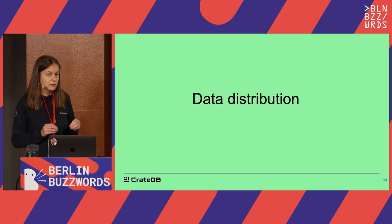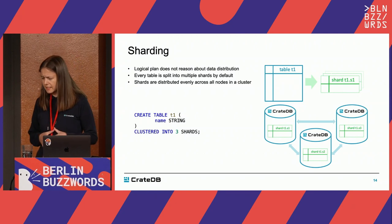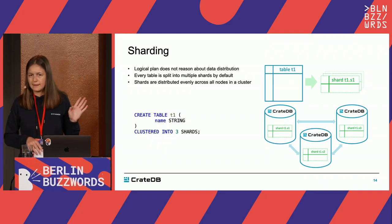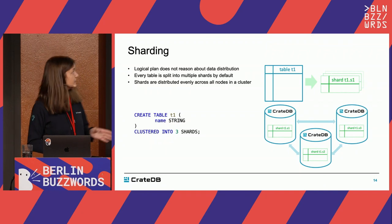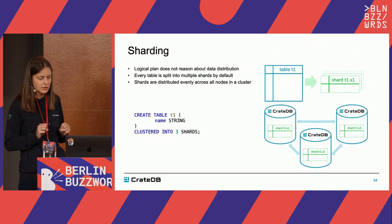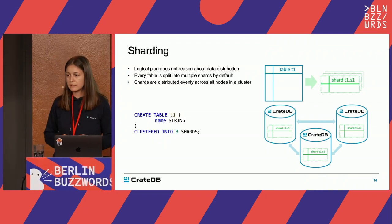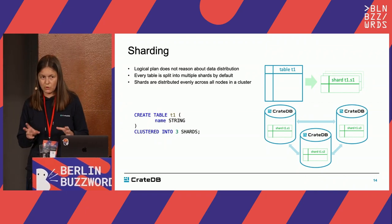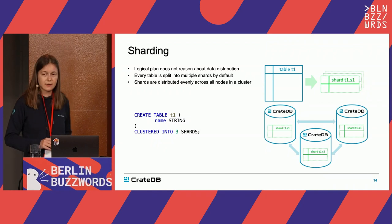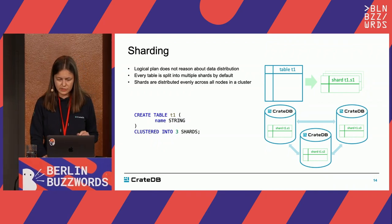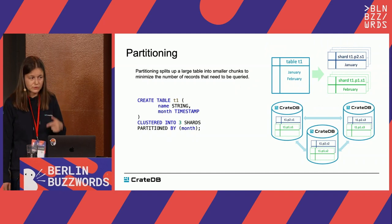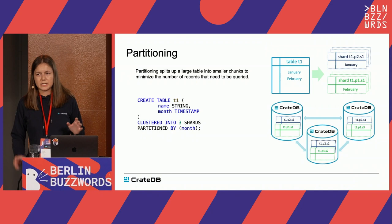The next topic is data distribution. In CrayDB and many other distributed databases, you need to think about how your data will be distributed across nodes. We support a concept called sharding, which is splitting your dataset and distributing it across the cluster. This is done automatically — whether you specify how many shards you want or not, CrayDB tries to reason about the best possible strategy for your dataset. This is done using the CLUSTER BY keyword in CrayDB.